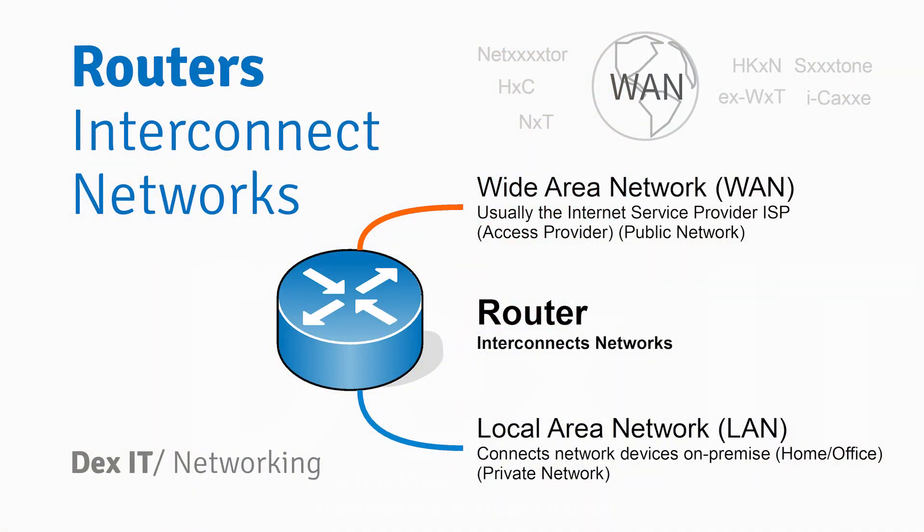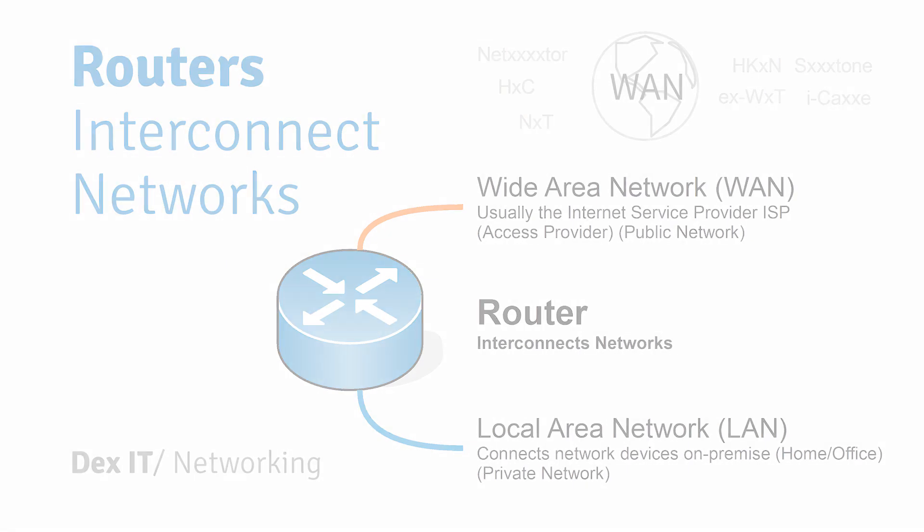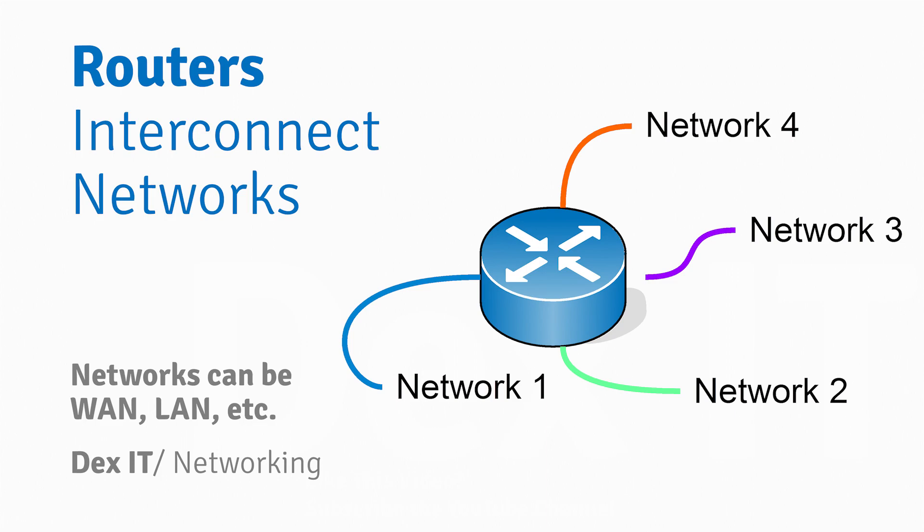When you're at home, usually there are two networks: the internet and your local network. But in commercial settings, routers may connect more than two networks — for example, different branches around an office. You may ask how do you define one, two, or three networks. There's another video here that talks about how we define a network from an IP perspective.